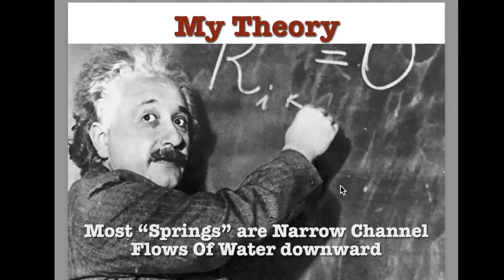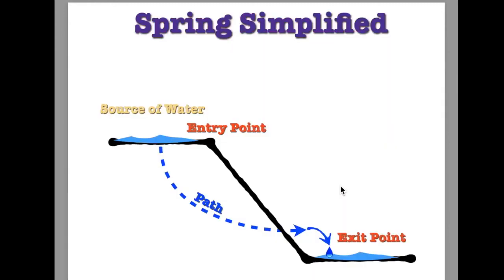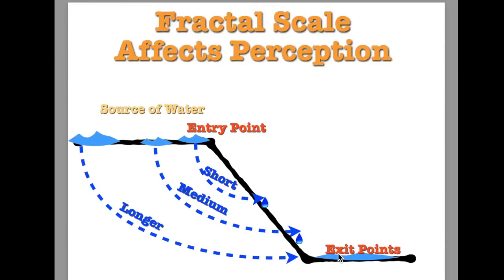So this is my theory: most springs are narrow channel flows of water that can't get down very quickly and don't go very far. If I were to simplify what that looks like: there's a source of water high — I call that the entry point. There'll be a path through the ground, and that water will exit at some distance from the entry point. The area of mystery is underground — what is the path of that water and how did it get there? We can track that pretty easily with dyes — red dyes, yellow or green dyes that you put into the ground and then use ultraviolet light to find at the exit. If you understand fractals — patterns that have different scales — you can have a short micro spring, a medium one, or a long spring. The distance water travels in the ground varies considerably based on conditions.